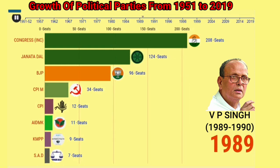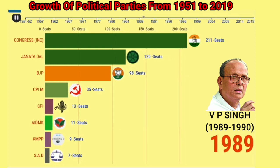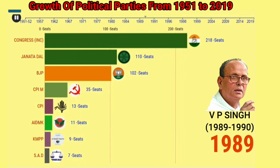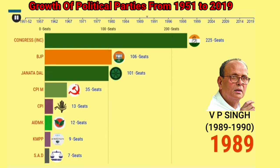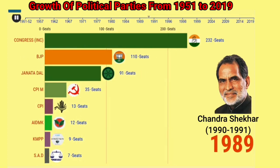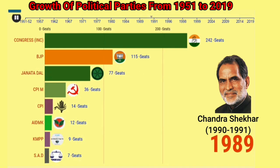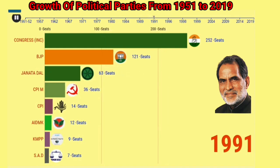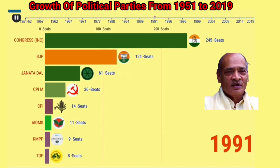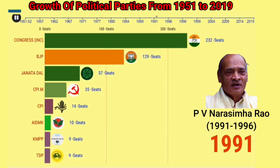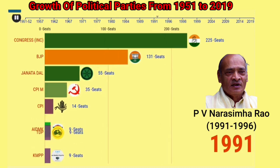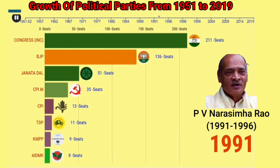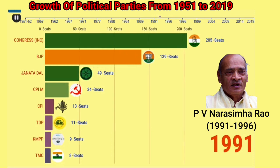V.P. Singh served as Prime Minister of India from 1989 to 1990 for only one year. Chaudhary Charan Singh became the Prime Minister of India for only one year. Chaudhary Charan Singh is noted as the first South Indian to become Prime Minister of India.